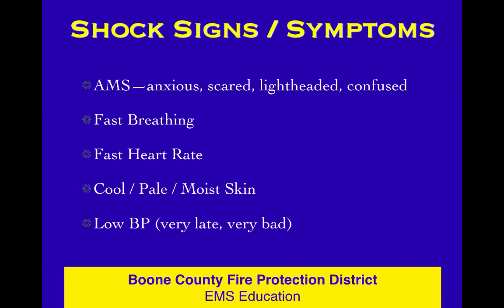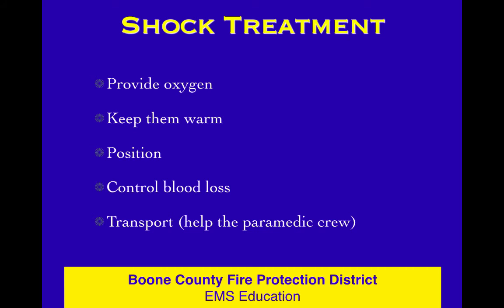A very late and very bad sign of shock is low blood pressure, measured with a blood pressure cuff and stethoscope — or estimated by finding the patient has no radial pulse but still has a central pulse like a carotid or femoral pulse. So the five signs of shock are: altered mental status, rapid breathing, rapid heart rate, cool pale clammy skin, and eventually low blood pressure. If you wait for the blood pressure to drop, your patient will have been in shock for a long time.